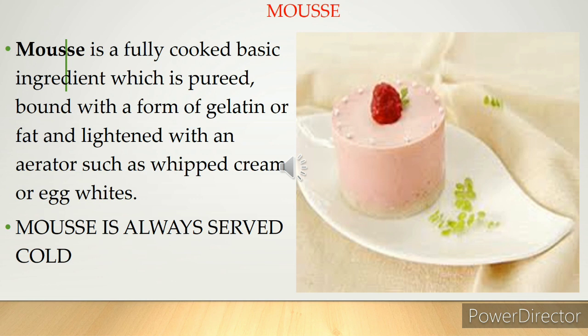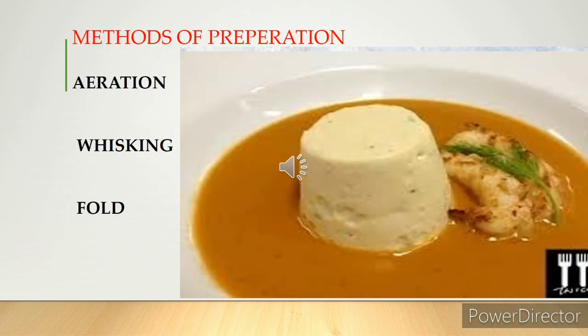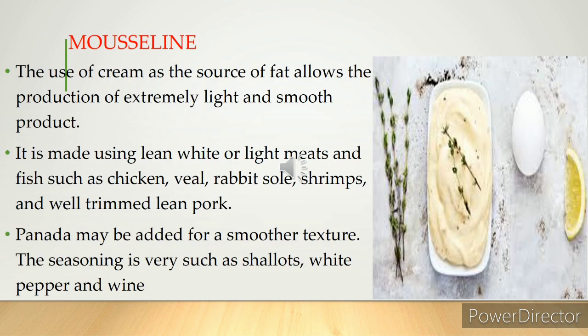Mousse is a mixture of cooked ingredients that are pureed and held together with gelatin, velouté sauce, mayonnaise, or aspic jelly, then enriched with cream and sometimes flavored with wine. Mousse is always served cold, very often attractively molded. It is often served on the cold buffet and at times for lunch. A binding agent — either whipped cream or egg white — is folded in, then set in individual molds and garnished attractively.